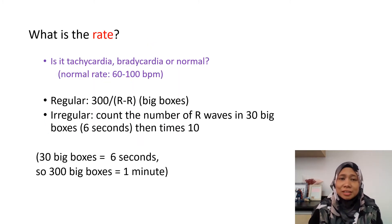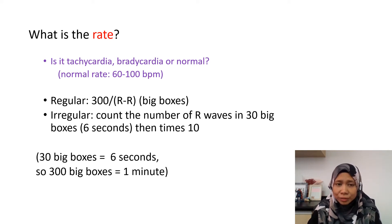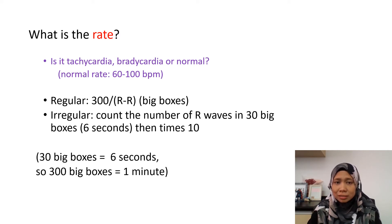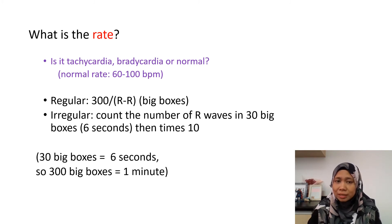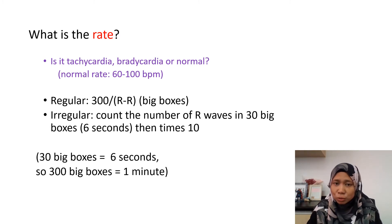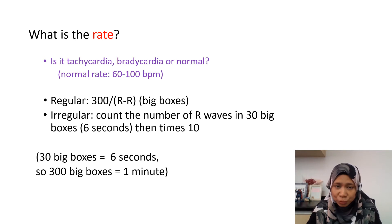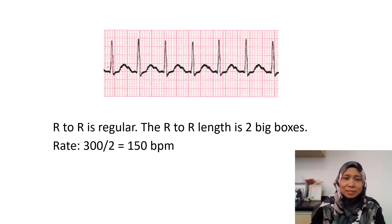To determine the rate — whether it is tachycardia, bradycardia, or normal — for a regular rhythm we take 300 divided by the number of big boxes from one R to the other R. For an irregular rhythm, we count the number of R waves in 30 big boxes and then multiply by 10. This is because 300 big boxes equals one minute, since one big box equals 0.2 seconds.